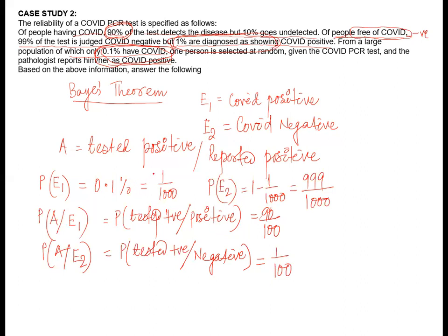So to summarize our known values: P(E1) = 1/1000, P(E2) = 999/1000, P(A|E1) = 95/100, and P(A|E2) = 1/100.